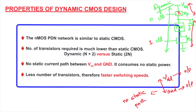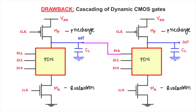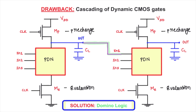Due to the reduced number of transistors, switching speeds are much faster, making dynamic CMOS design suitable for high-speed CMOS circuits. One major problem in dynamic circuits is the direct cascading of dynamic gates — direct cascading fails and the cascaded circuit does not work due to local glitch issues. A glitch refers to a sudden malfunction or fault in the circuit.